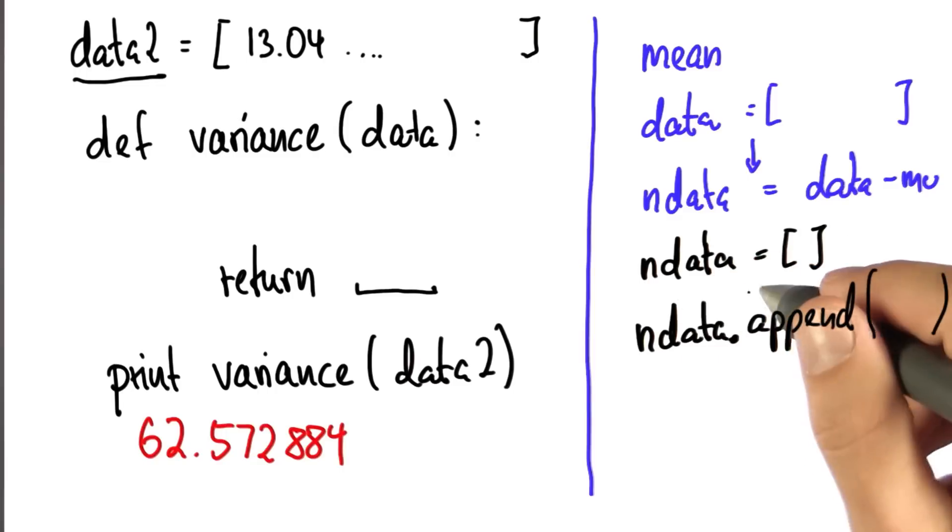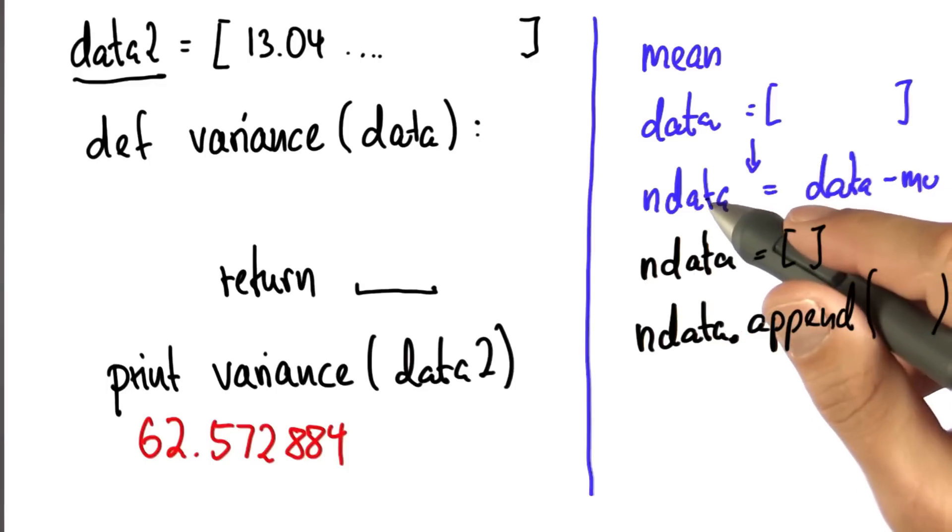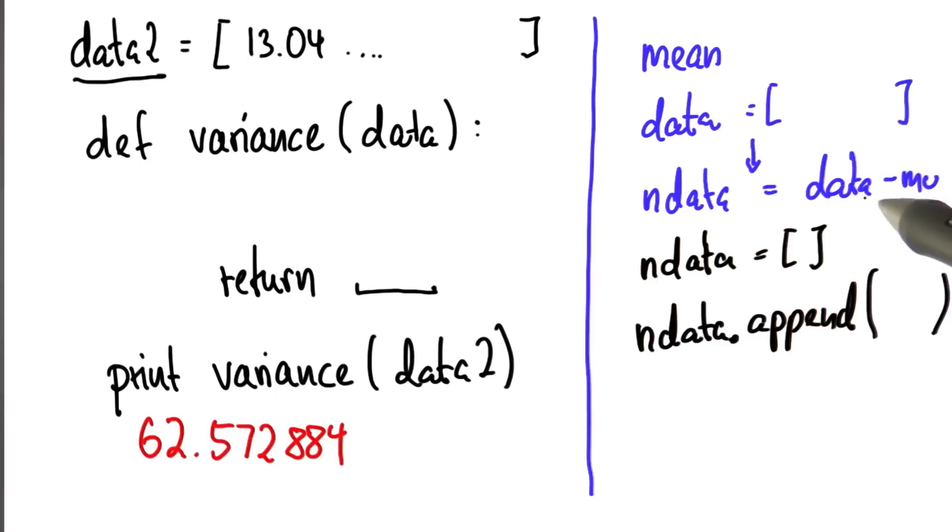So with an initial assignment of an empty list and a for loop where I go through all the data items and I append the appropriate thing to this new data, I get out this new data list, and then I can apply the same mean function to the new data list, and that gives me the variance. You got it?